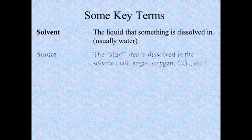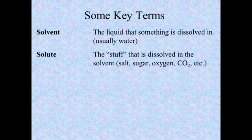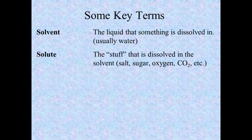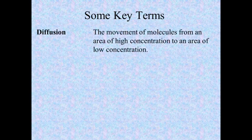So solvent is the liquid, and then we have something which is dissolved in that liquid, and we call that a solute. This could be salt, a sugar, a gas such as oxygen or carbon dioxide, starch, proteins, or amino acids. All kinds of things are dissolved in the water and moving around in it. So we now know what a solute and a solvent are, and we can move on to talk about a couple other key terms.